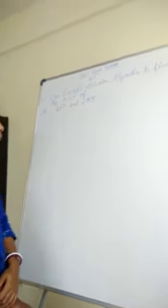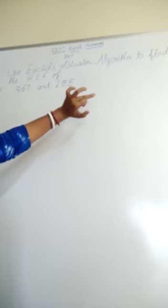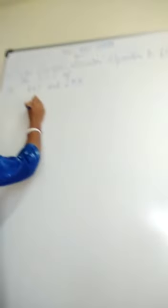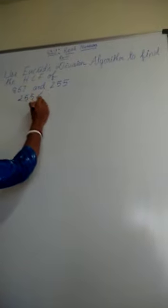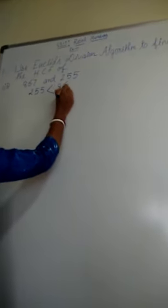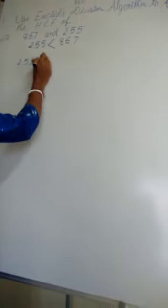Next sum. Question number 3. We have to find HCF between 867 and 255. So, first step is, which is the small number of 255? So, 255 is the smaller than 867. The start division. 255 will be the divisor and 867 will be the dividend.